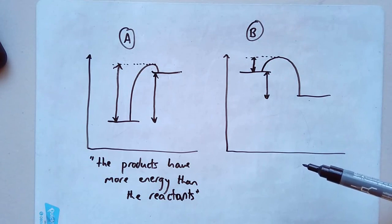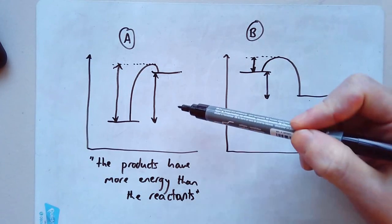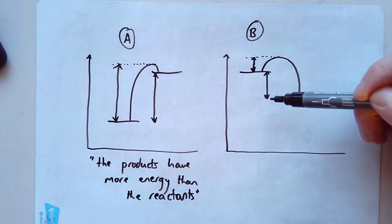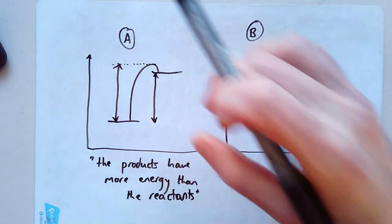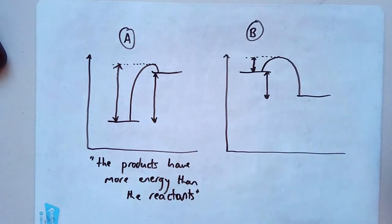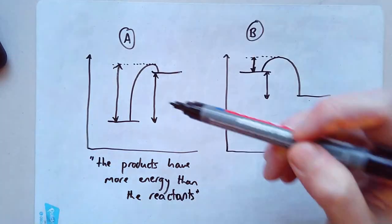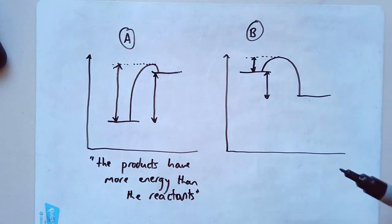Which profile has a greater overall energy change? A, because the difference between those two lines is larger. So the difference between those two lines is only that here. But it's much bigger on this side. And which profile will the temperature of the surroundings increase? That's B, because it's exothermic. In which profile will the temperature of the surroundings decrease? That's A, because again, A is pulling in energy from the surroundings. This energy, this extra energy has got to come from somewhere. It comes from the surroundings. So if the surroundings are losing energy, their temperature is going down.